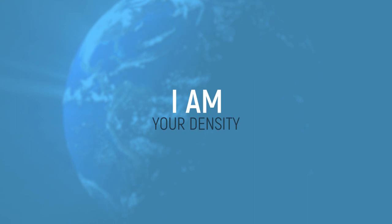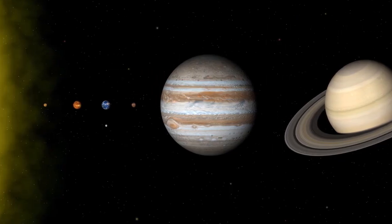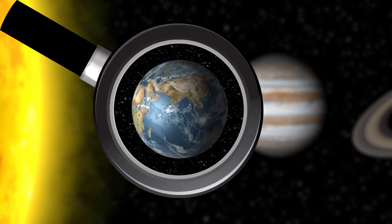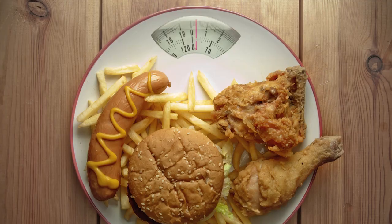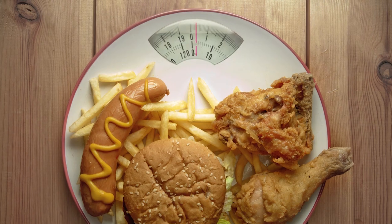I am your density. In our solar system, Earth is one of the smaller planets around. But did you know that it's the most dense of all the celestial bodies orbiting our sun? And that's not because our fattier foods are weighing the planet down.